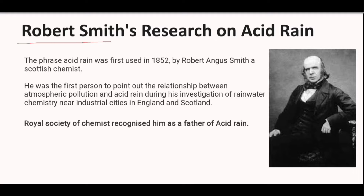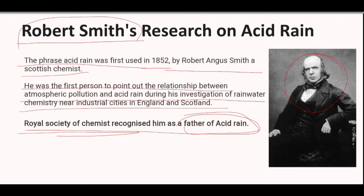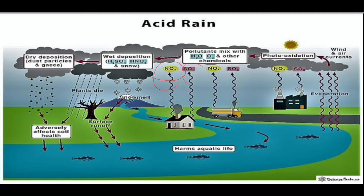Robert Smith was the first person to point out the relationship between atmospheric pollution and acid rain, during his investigation of rainwater chemistry near industrial cities in England and Scotland. He was recognized as the father of acid rain by the Royal Society of Chemists. In 1852, he was the first person to use the phrase 'acid rain' — he was a Scottish chemist.